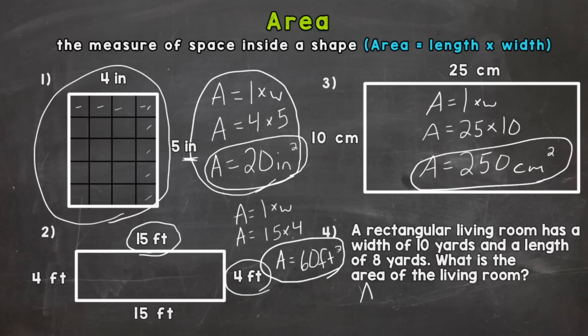So first step we need to write out the formula. Area equals length times width. Then we need to plug in. Length of 8 yards times width of 10 and then solve. So 8 times 10.